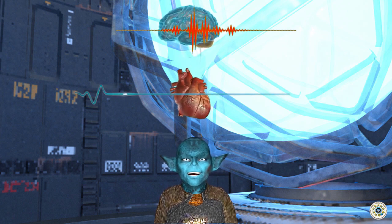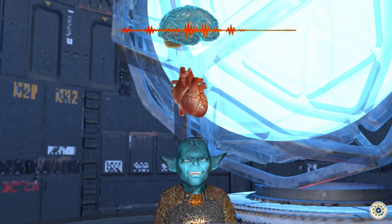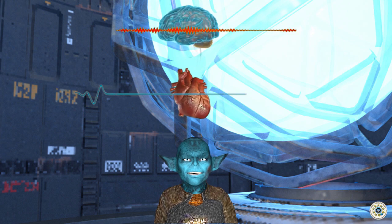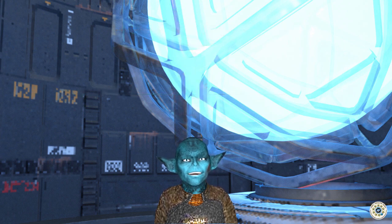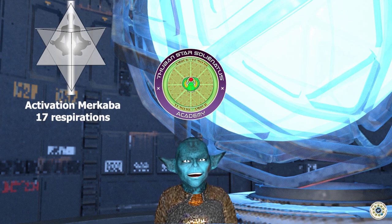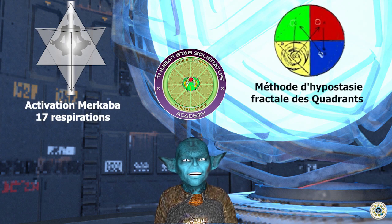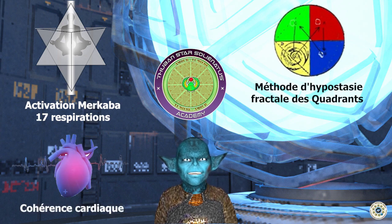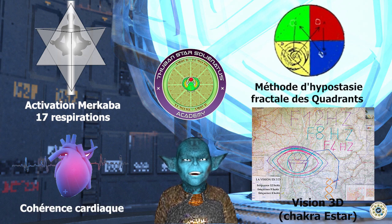Lorsque le voyage démarre, il doit se dérouler jusqu'à son terme. Voici donc quelques exercices enseignés au sein de la Touban Star Solinatus Academy permettant aux opérateurs experts de pratiquer ces voyages neuronaux en toute sécurité : activation de la Merkaba selon Drunvalo Melchizedek, et notamment la pratique des 17 respirations ; pratique de la méditation des cadrans par binôme pour s'entraîner à la synchronisation cérébrale ; pratique de la cohérence cardiaque ; pratique de la connexion au chakra Esthar.